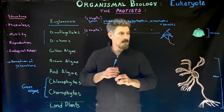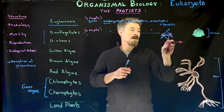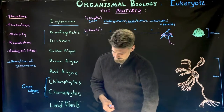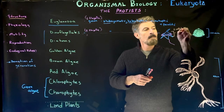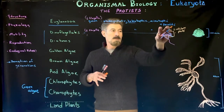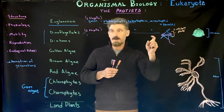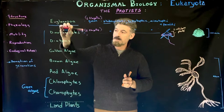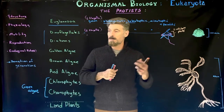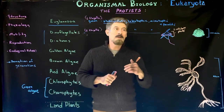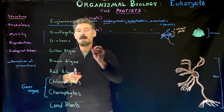One flagellum sticks off the cell, while the other flagellum actually wraps around the circumference of the cell. The cell also has two cellulose plates that make up a cell wall surrounding it, and they often have little spike-like structures that give them their unique look. These are single-celled aquatic organisms found in fresh and salt water. Dinoflagellates tend to be more marine, while Euglenozoa tend to be more in fresh water. Diatoms are also mostly photosynthetic.